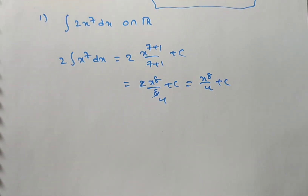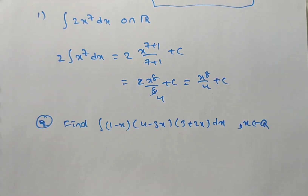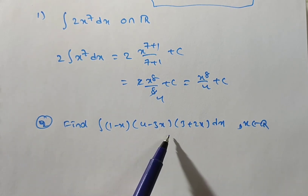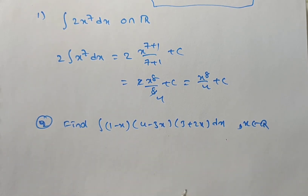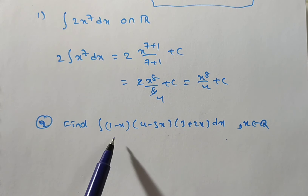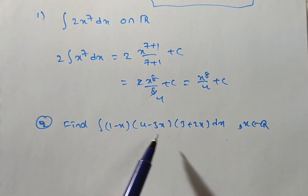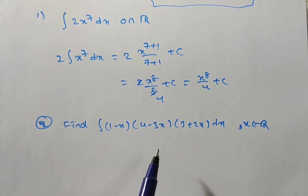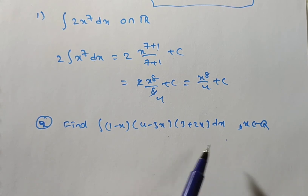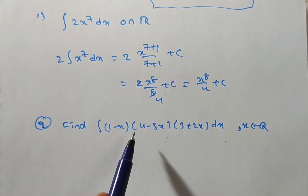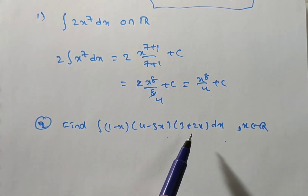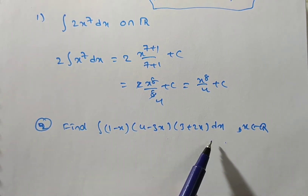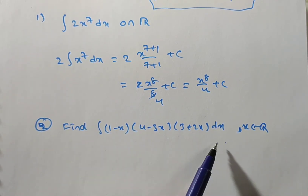The second problem is: find integral of (1 minus x)(4 minus 3x)(3 plus 2x) dx. They are not given directly in x to the power of n form — only as a product of linear factors. So we have to convert this product of linear factors into an algebraic polynomial.